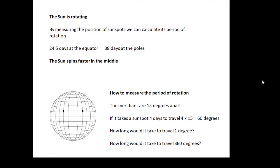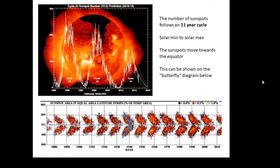How would you actually measure the period of rotation? You would take pictures of the sun, you'd put a grid over the top. If you read this here, the meridians are 15 degrees apart. And if it took four days to travel four of these meridians, which is 60 degrees, how long would it take to travel one degree? And then how long would it take to travel 360 degrees? And then you can figure out the rotational period of the sun.